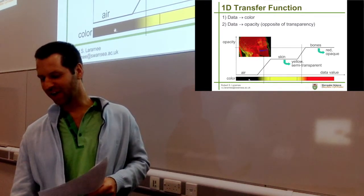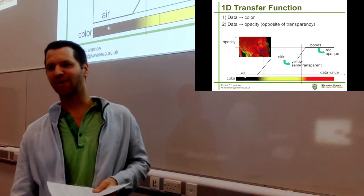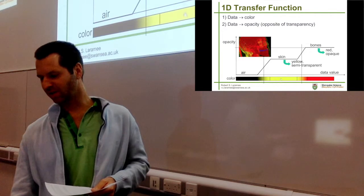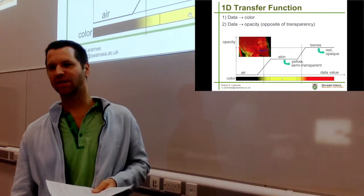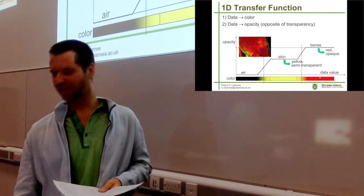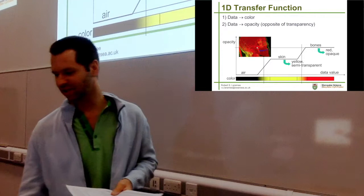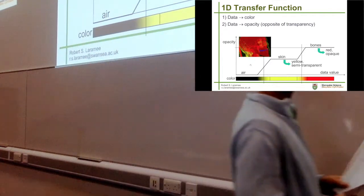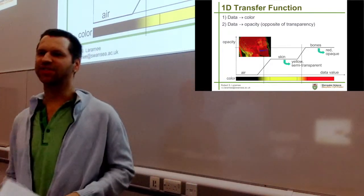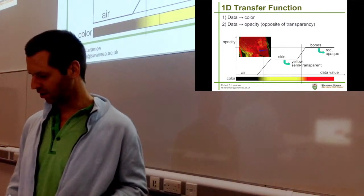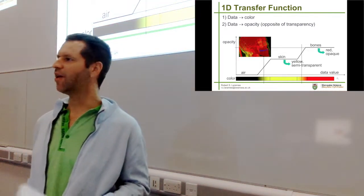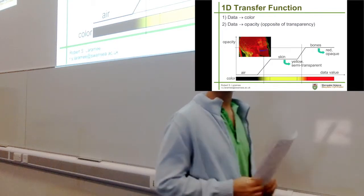Air is mapped to black or transparent, skin or intermediate middle values are mapped to yellow, and high values are mapped to red. Is there another color in this image? Blue. Exactly - what are those blue? Teeth. Exactly. And they're the highest density. There should be a blue here in the transfer function - this is essentially an error on the slide.